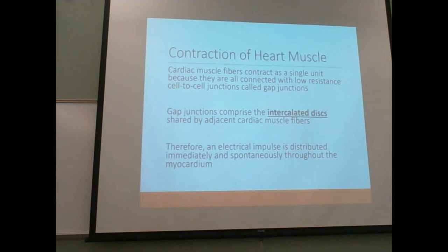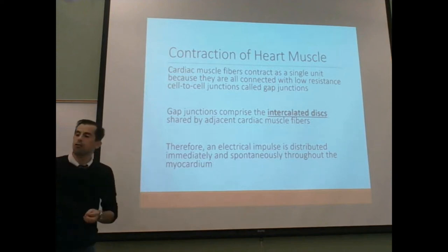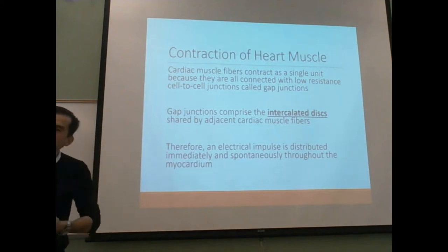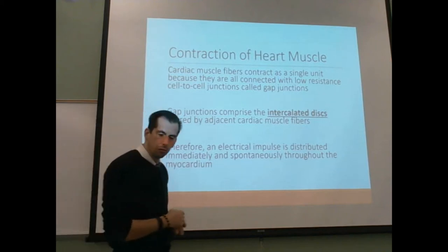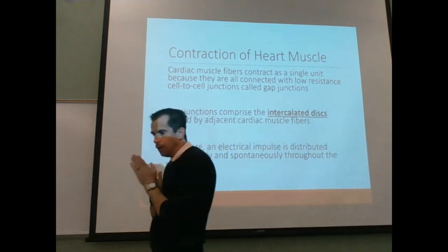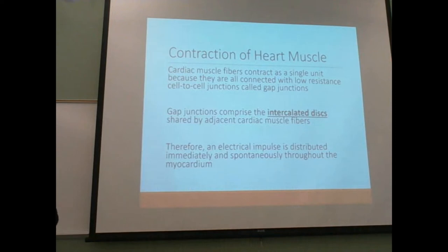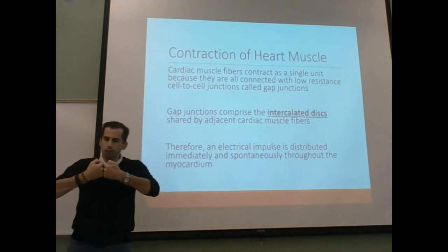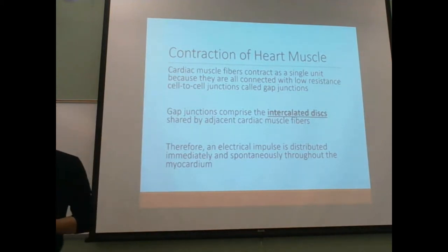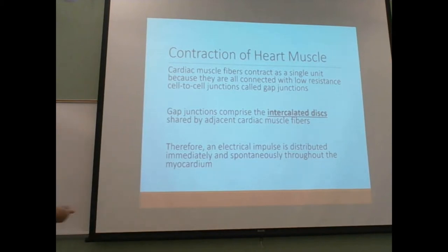Secondly, cardiac muscle cells don't require independent innervation. Every skeletal muscle cell needed a neuron telling it what to do — not cardiac. At the junctions where one cell adheres to another, you have two different types of connections. One is structural, called the intercalated disc. In lab, when you look at microscope slides of cardiac muscle, you'll see muscle cell, muscle cell, and a nice dense line connecting the two — dense attachments that keep cells in contact when they pull.